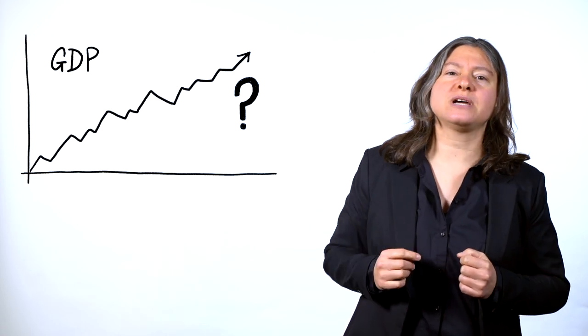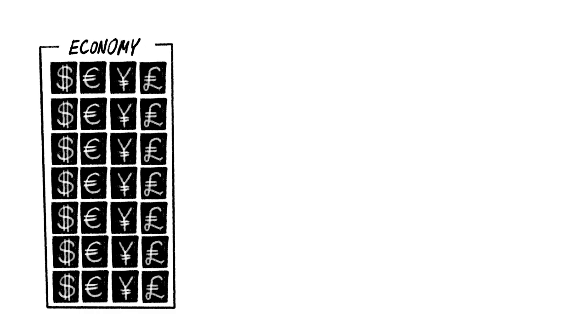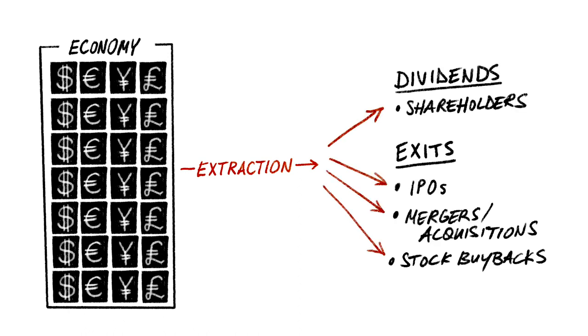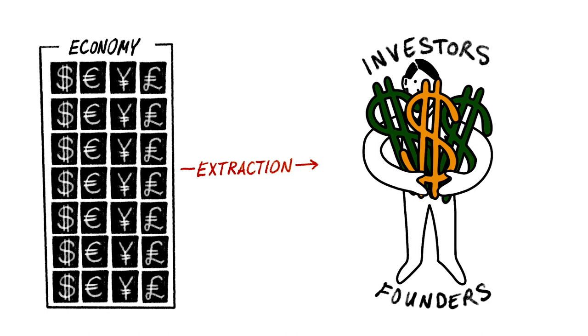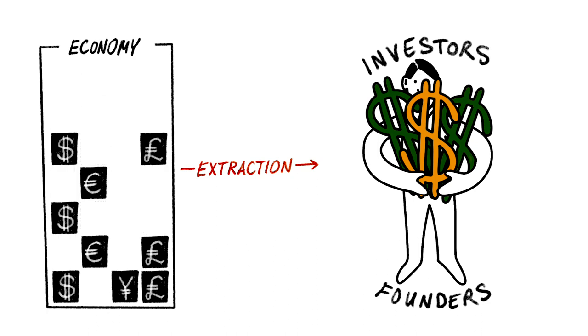She and the other post-growth economists explain that there's too much extraction happening from our economies. This can occur in the form of dividends, like shareholders, and exits. So think of IPOs, mergers, acquisitions, and stock buybacks. All of these situations result in a large payoff for the investors and founders. But this is pulling financial value out of our businesses, and therefore our economies.